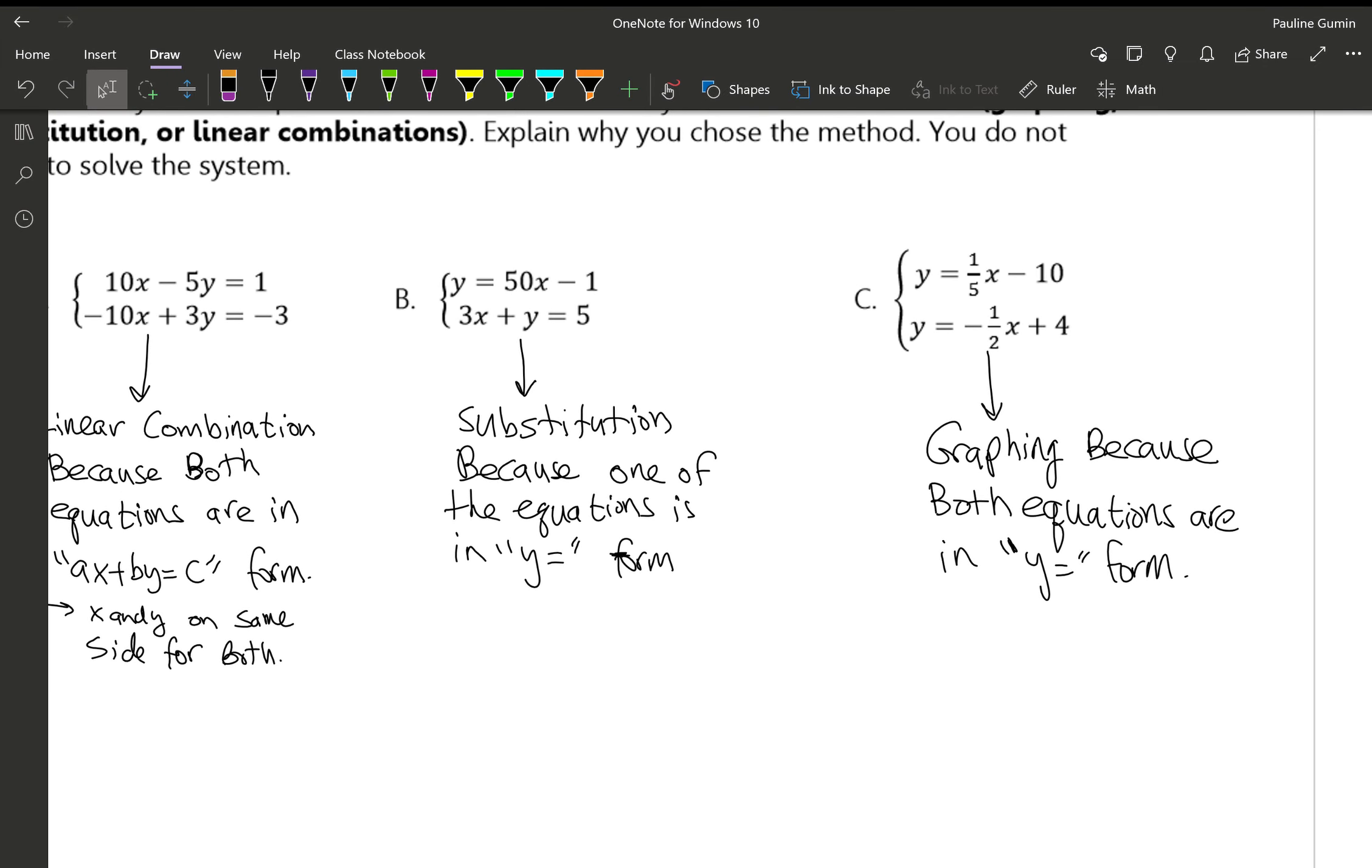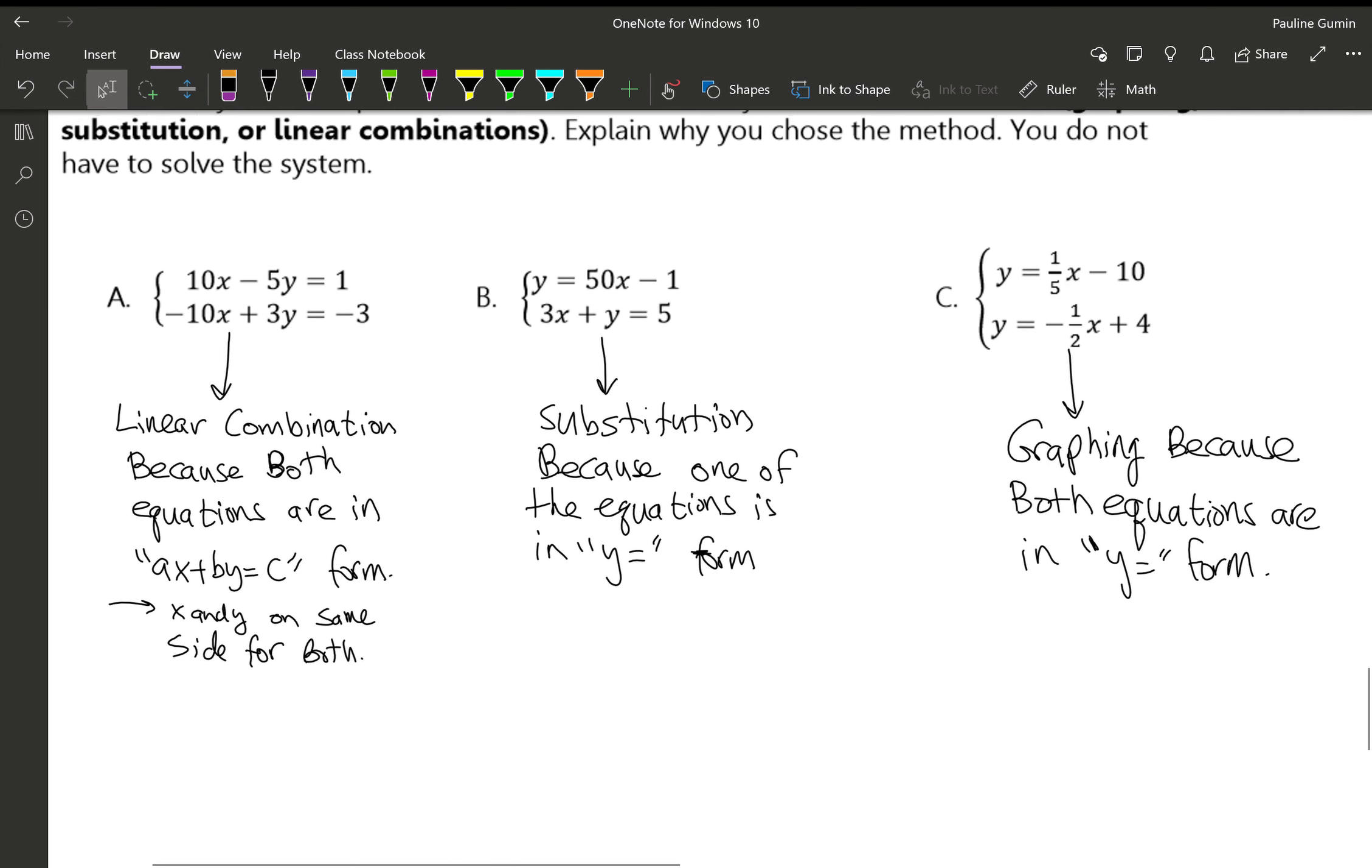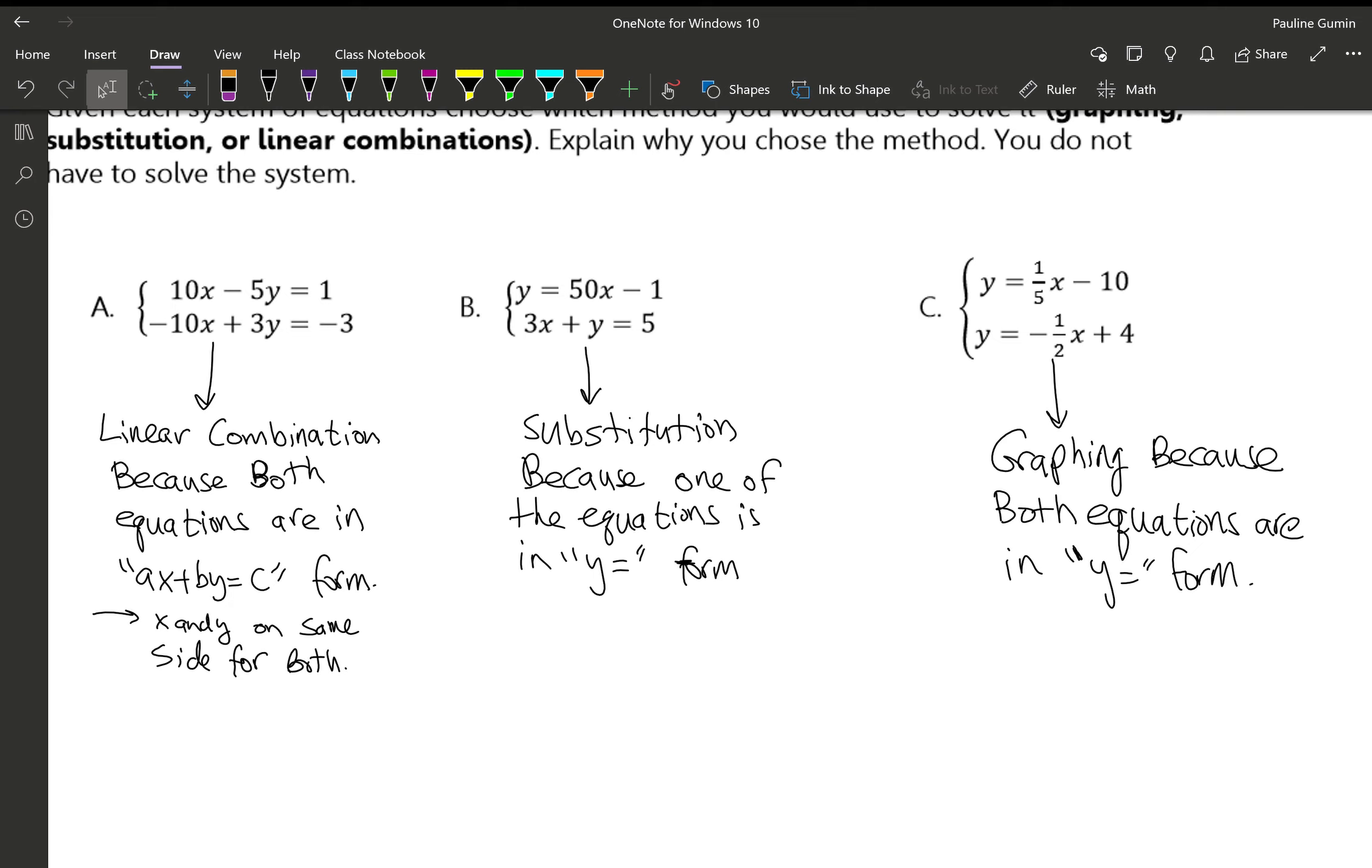So I know we did substitution when they're both Y equals. But I think that when they're both Y equals, the best option is to graph them. The best option for substitution is if one of them is Y equals or X equals. And if neither of them are X equals or Y equals, that's when linear combination is required. Now, I wouldn't graph if letter C was both X equals. If they were both X equals, that's a sign to use substitution. So graphing is when both are Y equals. Substitution is when one of them is Y equals or X equals. And linear combination is when neither of them have a Y or X equals. They're both on the same side. If you have any questions, please let us know. Have a wonderful rest of whatever day it is for you. Bye!